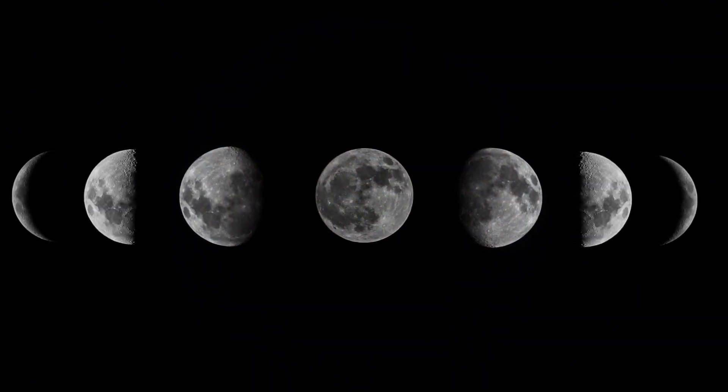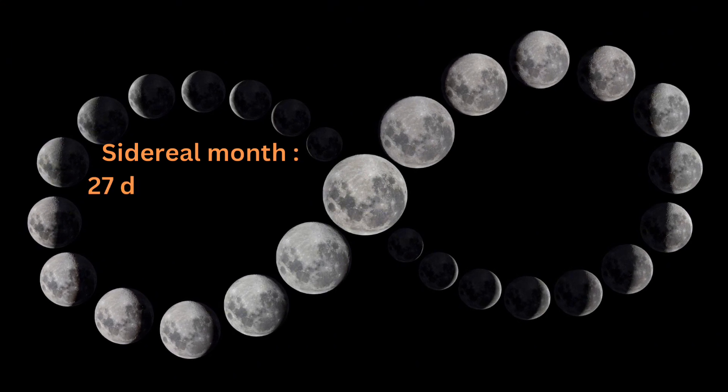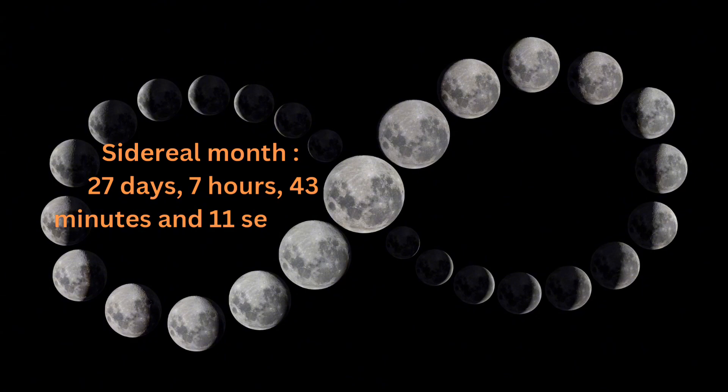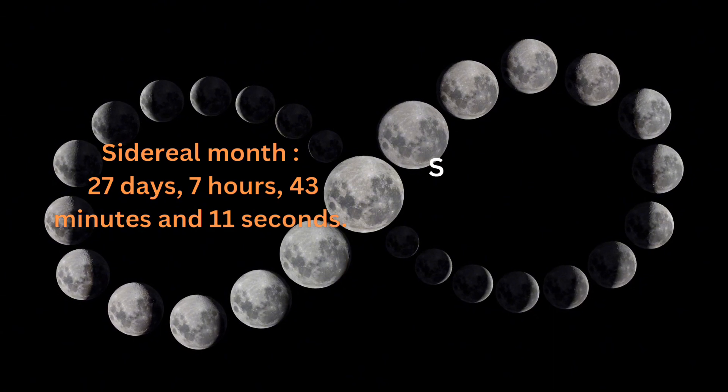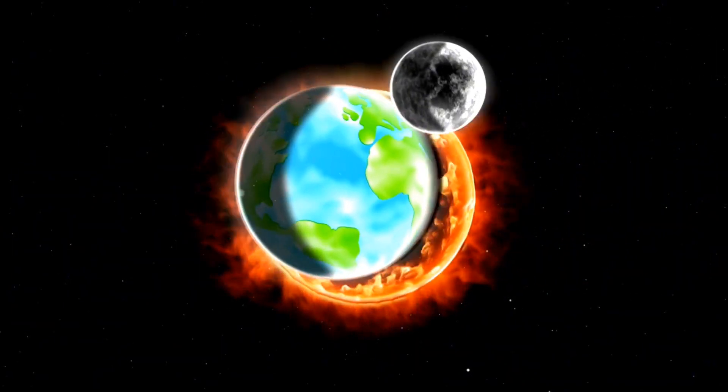The sidereal month is measured with respect to the fixed stars, and synodic month is measured with respect to the sun. Because of the influence of the sun's gravity, the synodic month is longer than the sidereal month.